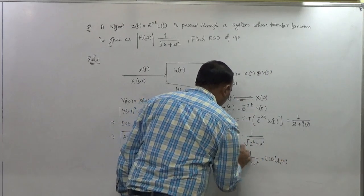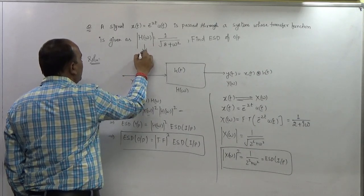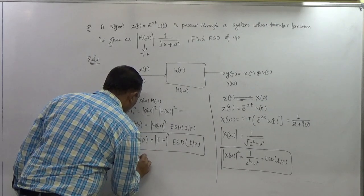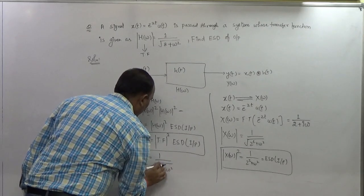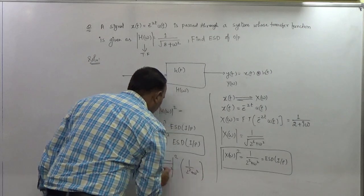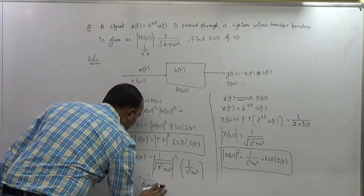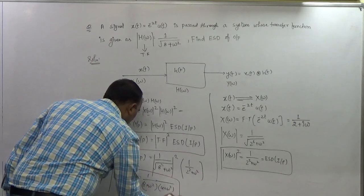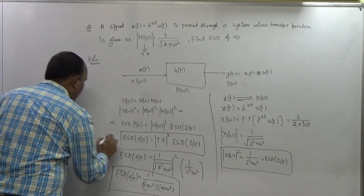H(ω) is already given as 1/√(8 + ω²), so |H(ω)|² = 1/(8 + ω²). To get the energy spectral density of the output, we multiply: energy spectral density of output = |H(ω)|² × |X(ω)|² = 1/(8 + ω²) × 1/(4 + ω²). Therefore the required answer is: energy spectral density of the output = 1 / [(8 + ω²)(4 + ω²)]. Thank you.